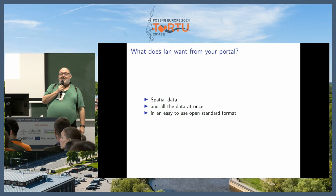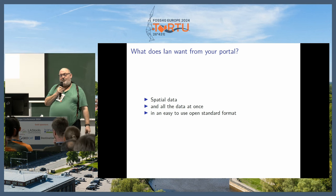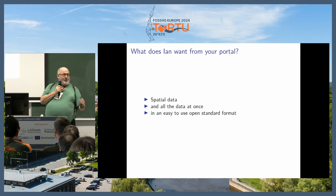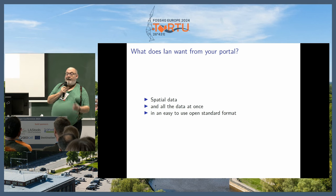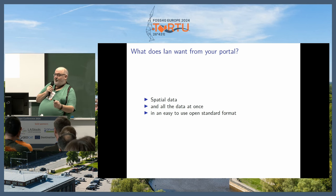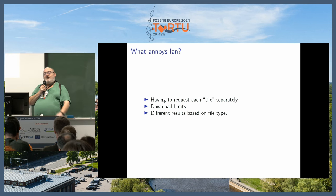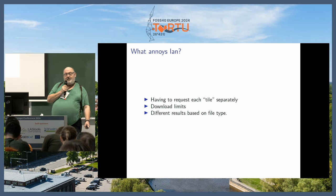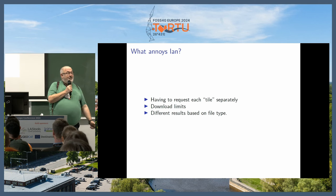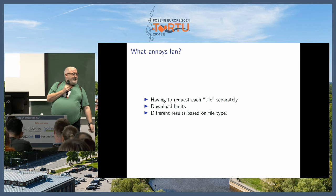So what do I want when I visit your geoportal? I want spatial data — because I'm a geographer I always want the map data as well as the statistical data. I don't want to go to a separate site to find it. I want all the data I need in an easy-to-use open standard format. Things that annoy me: having to request each tile separately, download limits, different results based on which file type I've selected, and data that's only available if you run ESRI.